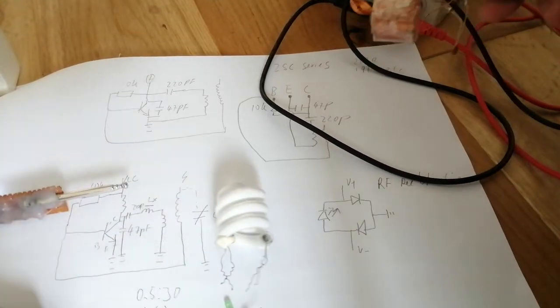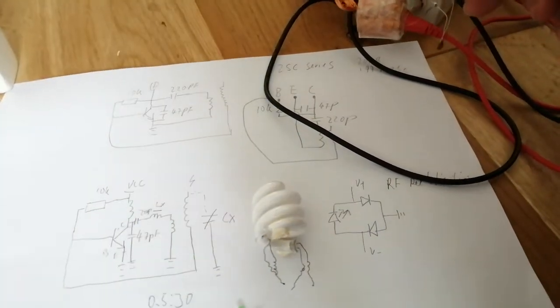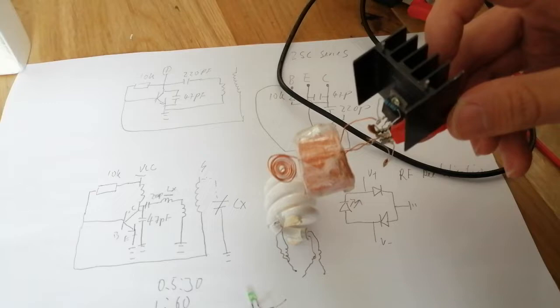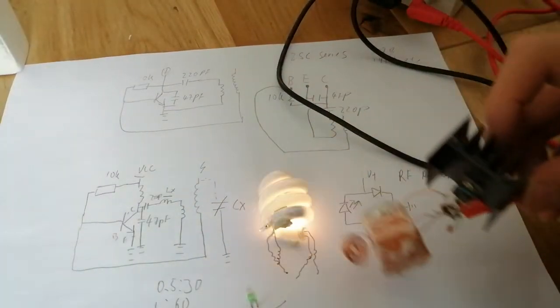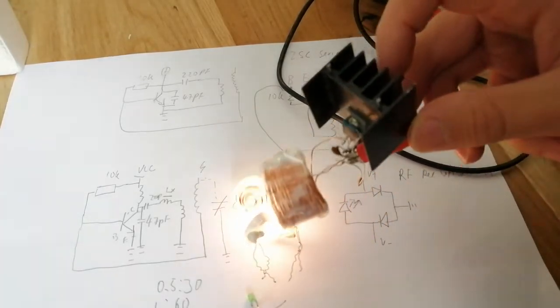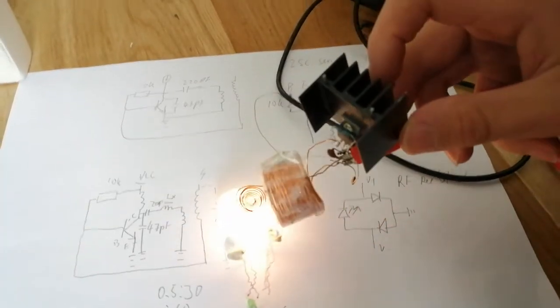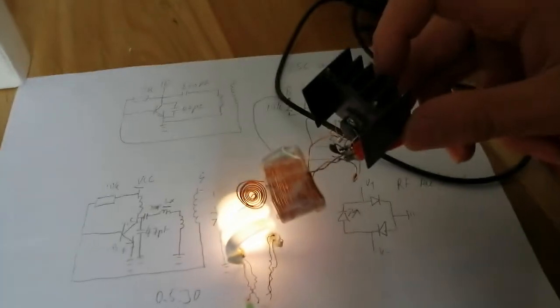Here we have got a fluorescent tube just to show you that there is high voltage present. See, it's lit up. In many of those videos they show about the EMP jammer, they always like to do a fluorescent tube lighting up, but I'm going to just zoom close to them.